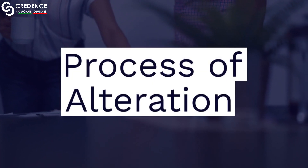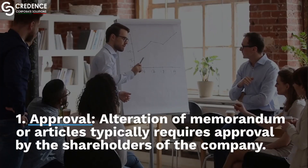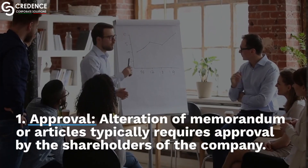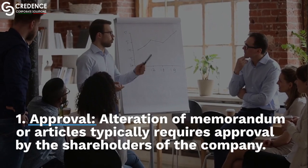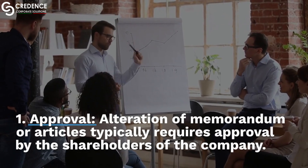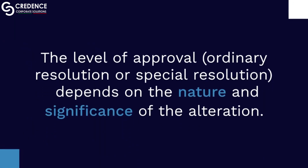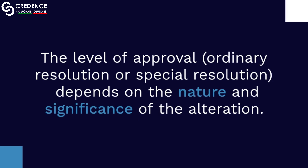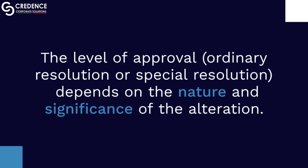Process of Alteration: Approval. Alteration of Memorandum or Articles typically requires approval by the shareholders of the company. The level of approval — ordinary resolution or special resolution — depends on the nature and significance of the alteration.